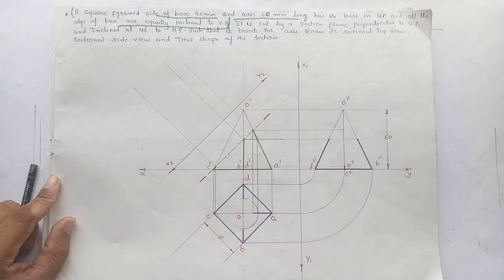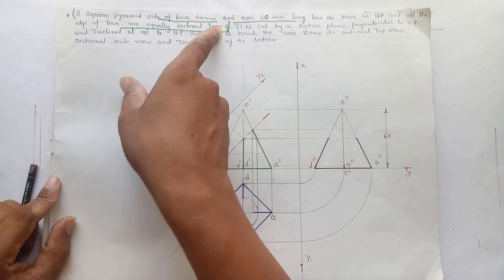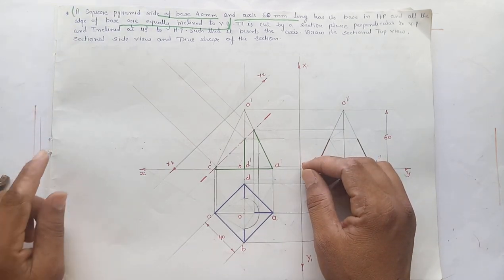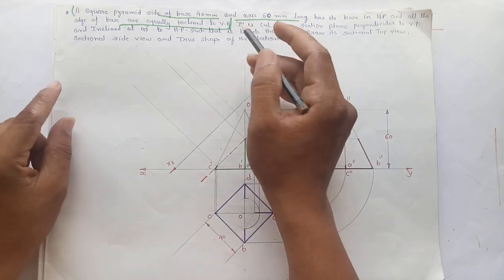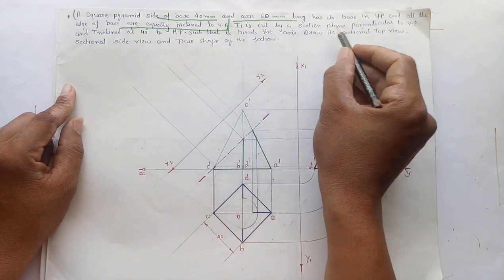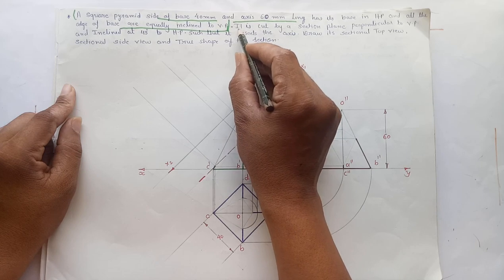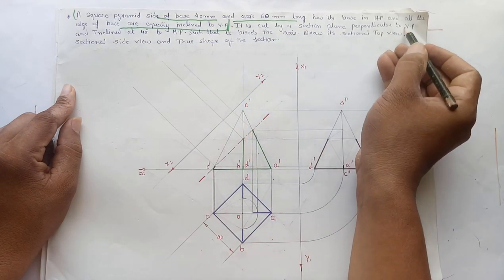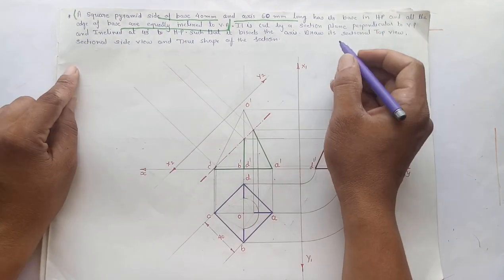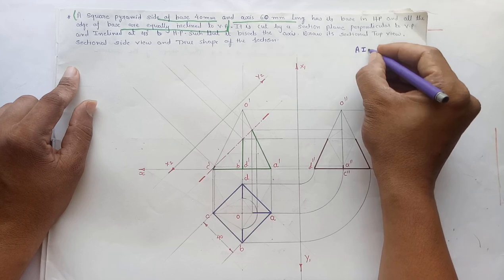This is the plan and elevation because the pyramid is resting on its base and all edges of the base are equally inclined to VP. Now we have to cut the pyramid using a cutting plane. It is cut by a section plane perpendicular to VP and inclined at 45 degrees to HP. This means the cutting plane is an AIP — auxiliary inclined plane — and since it is AIP, we have to show the cutting plane in the elevation.